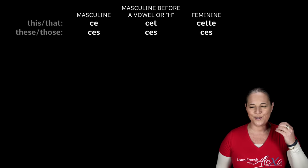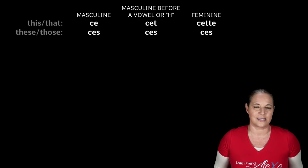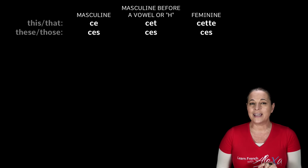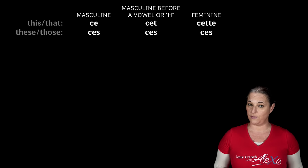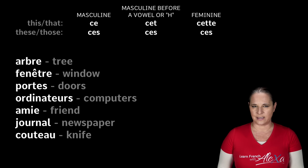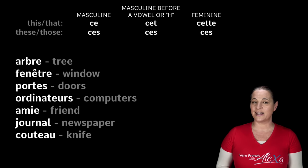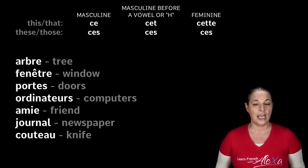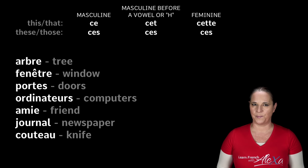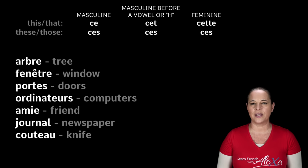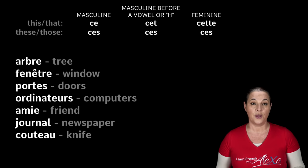The list you're about to see has no gender indicated — I didn't put le or la. I want you to try to work it out by yourselves. Guess if you don't know! Remember to look at the end of the word too — does it have an S? Is it plural? Here are the words: arbre (tree), fenêtre (window), portes (doors), ordinateurs (computers), amie (friends/girlfriend), journal (newspaper), couteau (knife). Can you take a minute and try to guess which demonstrative adjective goes before each word?